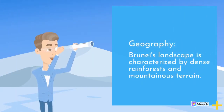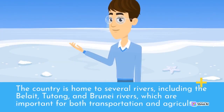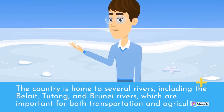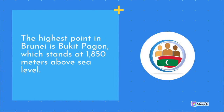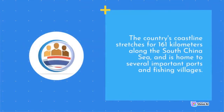Brunei's landscape is characterized by dense rainforests and mountainous terrain. The country is home to several rivers, including the Belait, Tutong, and Brunei rivers, which are important for both transportation and agriculture. The highest point in Brunei is Bukit Pagon, which stands at 1,850 meters above sea level. The country's coastline stretches for 161 kilometers along the South China Sea, and is home to several important ports and fishing villages.